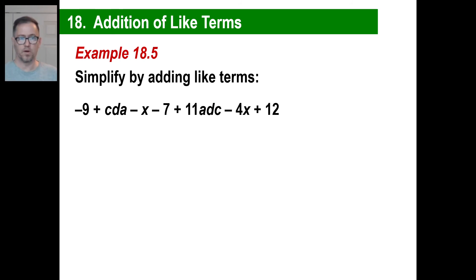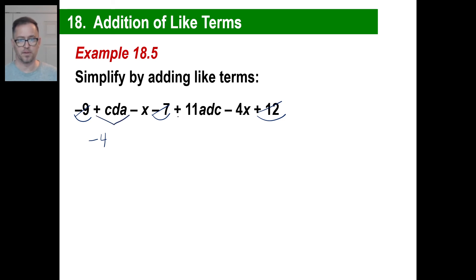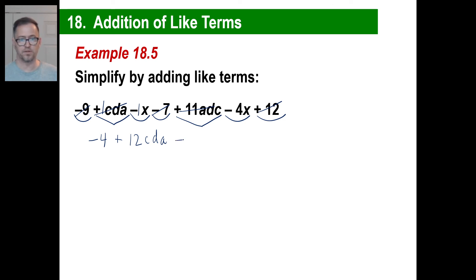Pause and copy, and try this one yourself. For the constants: negative 9, negative 7, and 12. Negative 9 minus 7 is negative 16. Negative 16 plus 12 — different signs, subtract — you get negative 4, since negative 16 is farther from zero. Then cda: there's one cda and 11 more, which gives 12cda. For x: negative 1x minus 4x is negative 5x. And we are done.